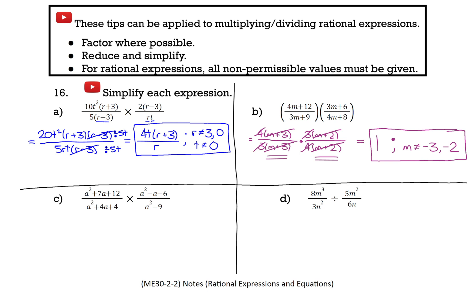For Part C, there are things to factor in all four areas — both numerators and denominators — but we'll need different strategies. The top left is an inspection question since the leading coefficient is 1: find a pair that adds to 7 and multiplies to 12. Bottom left: adds to 4 and multiplies to 4. Top right: adds to negative 1 and multiplies to negative 6. Bottom right has two terms, so check for a difference of squares.